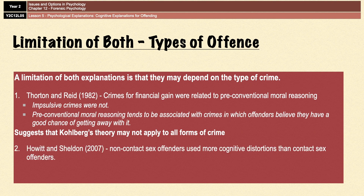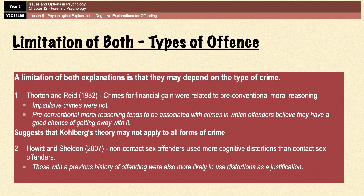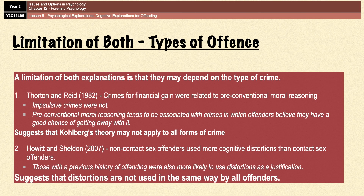The same limitation also applies to the cognitive distortion explanation. Howitt and Sheldon in 2007 gathered questionnaire responses from sexual offenders and, contrary to what the researchers predicted, found that non-contact sex offenders — those who access sexual images on the internet — used more cognitive distortions than contact sex offenders who had physically abused children. Those with a previous history of offending were also more likely to use distortions as a justification. This suggests that distortions are not used in the same way by all offenders, which is a limitation of the theory.